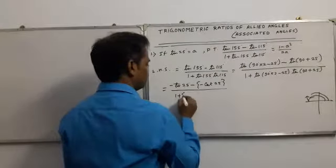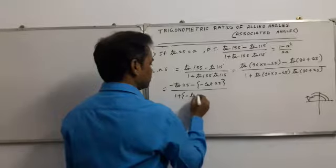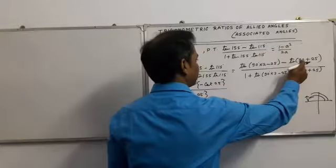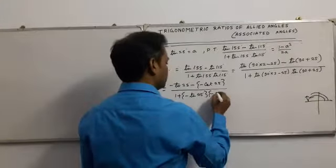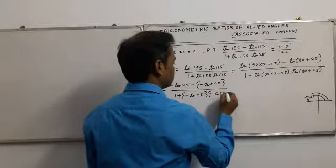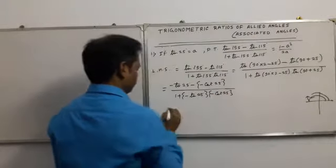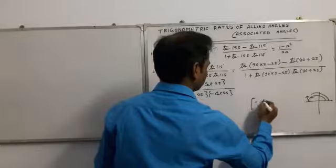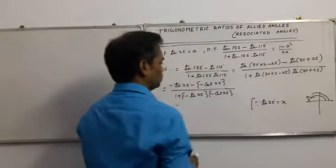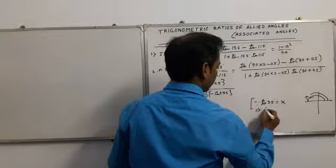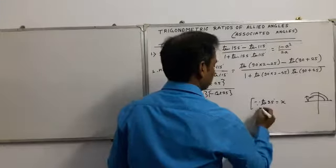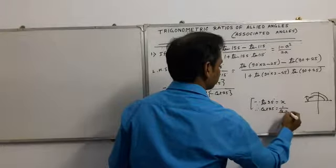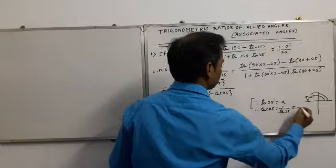So tan 155° becomes minus tan 25° and tan(90° + 25°) becomes minus cot 25°. In the denominator, tan 155° also becomes minus tan 25° and tan 115° also becomes minus cot 25°. Since tan 25° = a, we have cot 25° = 1/tan 25° = 1/a.